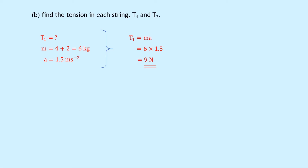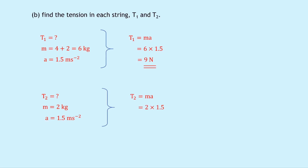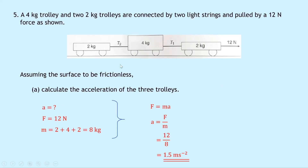For tension T2, only the two kilogram trolley at the end is being pulled along behind that string. So the mass is two kilograms and acceleration is 1.5 meters per second squared. Writing T2 equals MA: two times 1.5 gives three Newtons. So the 12 Newtons is split into nine Newtons for T1 and three Newtons for T2, which totals 12 Newtons.